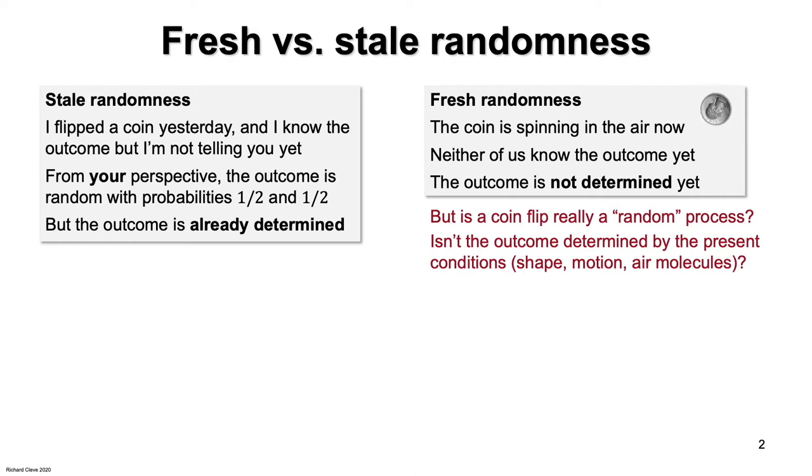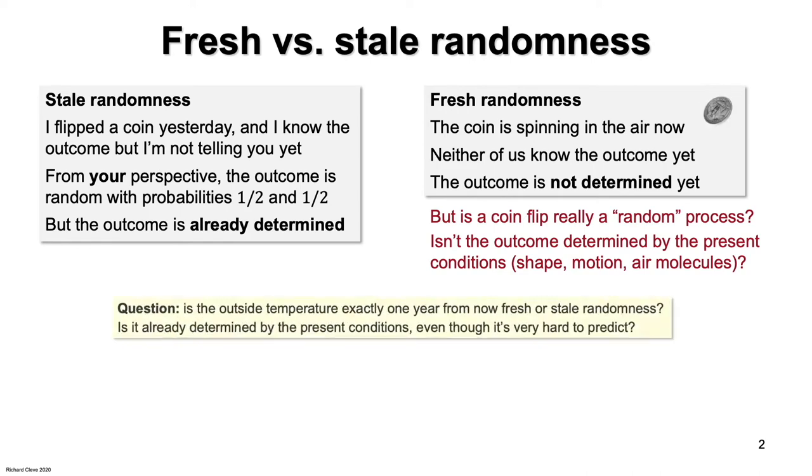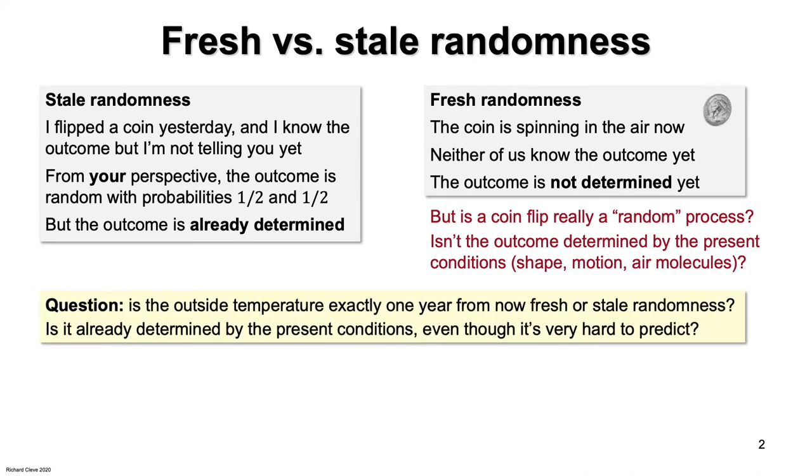A similar question arises with predicting the weather. Is the outside temperature one year from now fresh or stale randomness? To make the question well-defined, suppose that we mean the temperature at a specific place and round it off to the nearest degree.